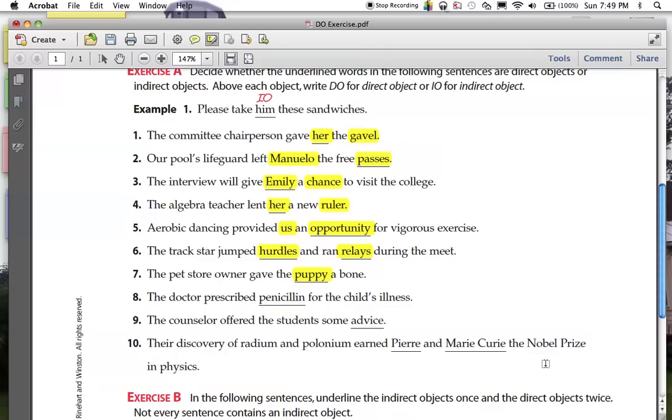The owner is the subject. What was given? The bone, which means the puppy is an indirect object. The bone goes to the puppy. Direct to indirect.